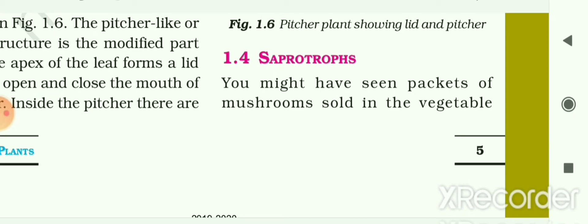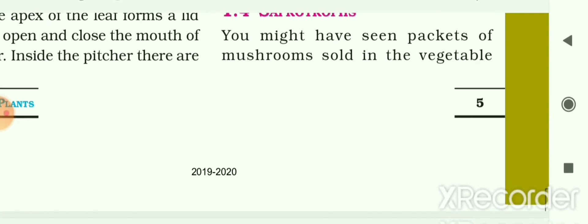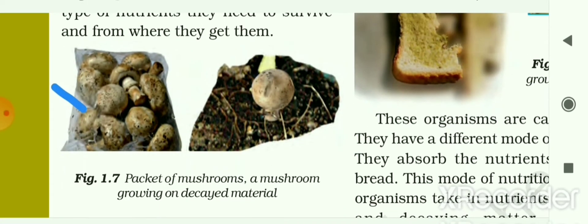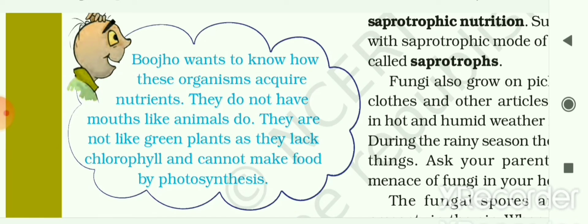You might have seen packets of mushroom sold in the vegetable market. You may have also seen fluffy umbrella-like structures growing in the moist soil or on rotting wood during the rainy season. Now let us find out what type of nutrients they need to survive and from where they get them. In this first picture, a packet of mushrooms is shown, and in the second picture, a mushroom growing on decaying material. Bujaho wants to know how these organisms acquire nutrients, because they do not have mouths like animals and they lack chlorophyll, so they cannot make food by photosynthesis.